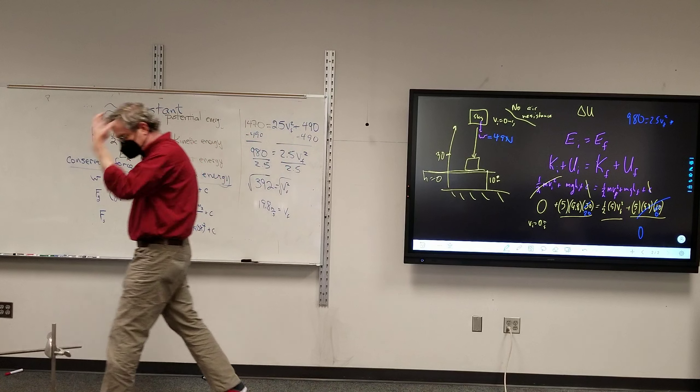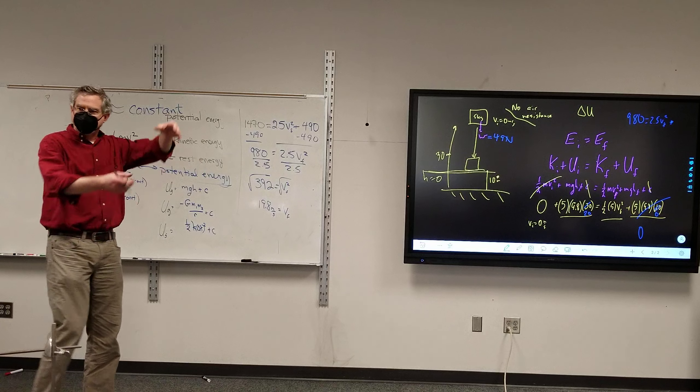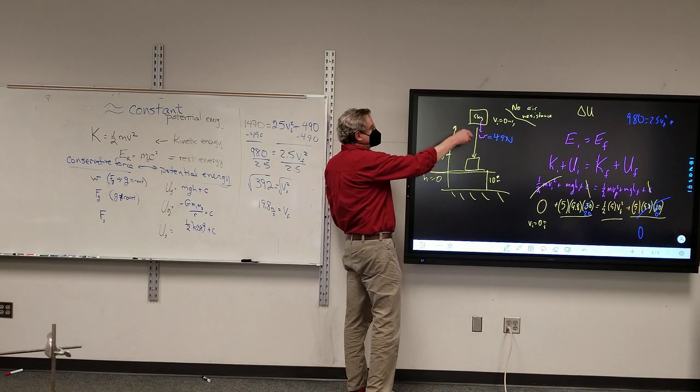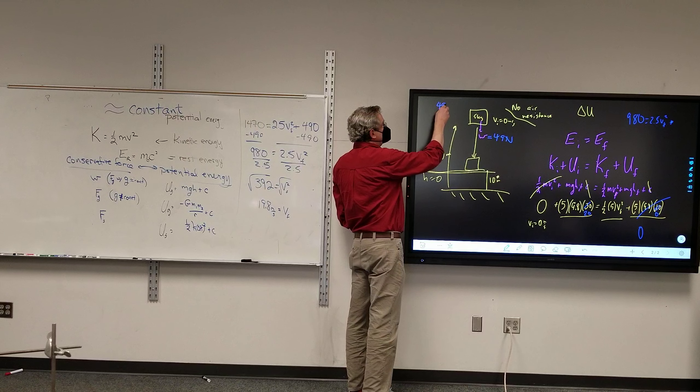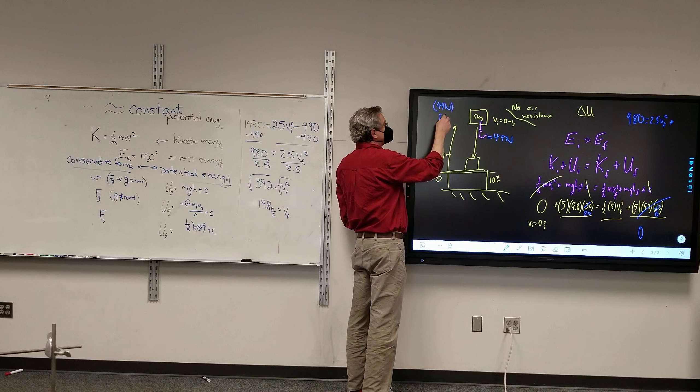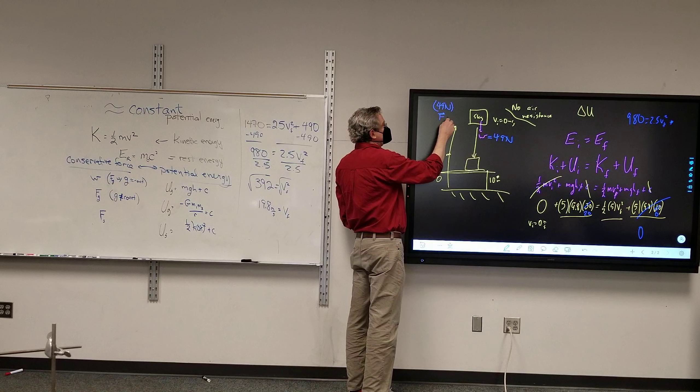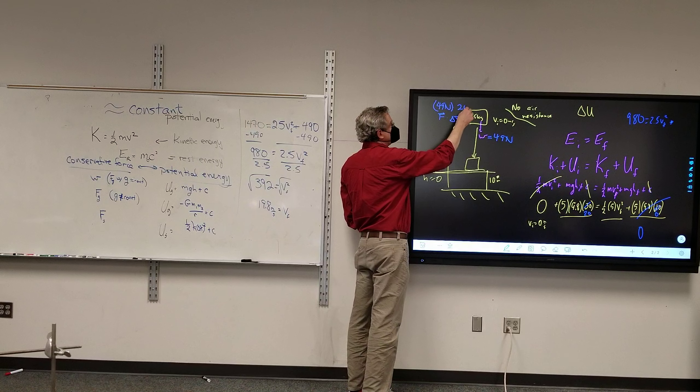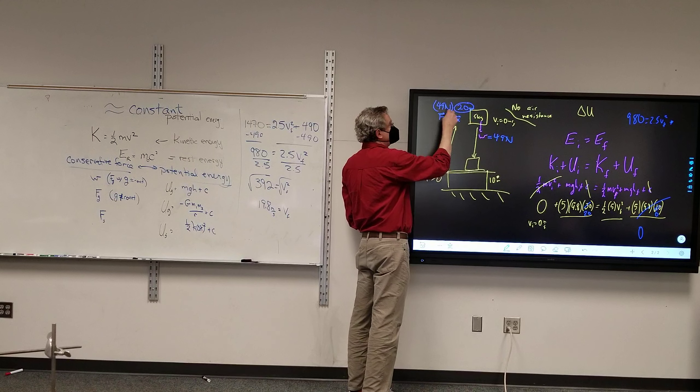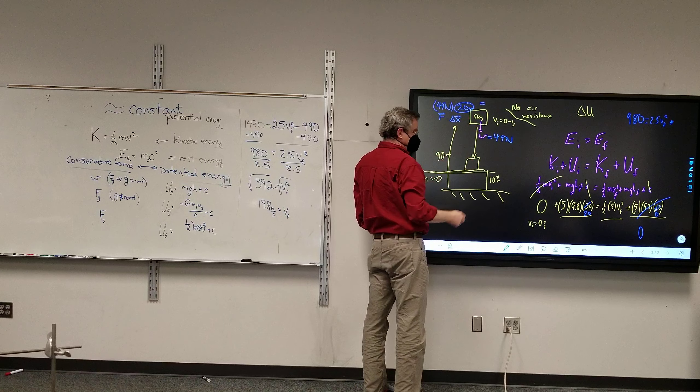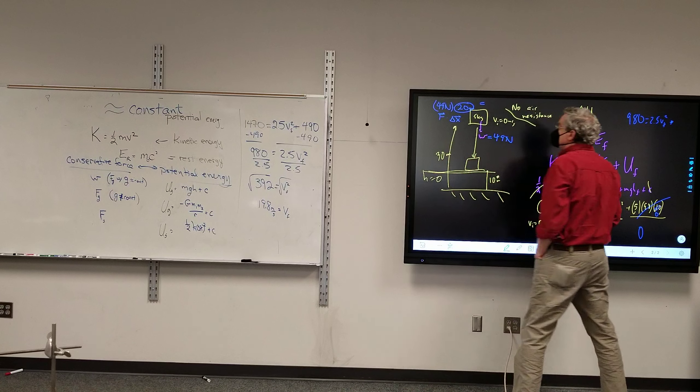The Earth is pulling on this thing 49 newtons for the duration of the problem, which is 20 meters. So if I look at that, 49 newtons times the displacement - the thing goes down 20 meters. So 49 newtons times 20 meters. The math problem is 49 times 20, which is 980.